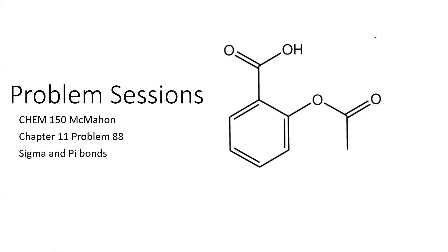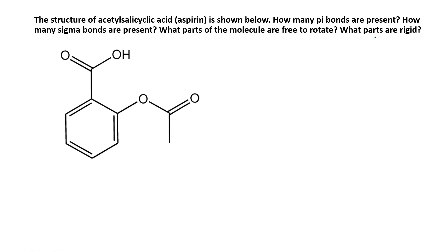Hello, students. This week we have another session for solving problems, and we're choosing Chapter 11, Problem Number 88: how to determine the number of sigma and pi bonds in an organic structure. The problem reads: the structure of acetylsalicylic acid, which essentially is aspirin, is shown below. How many pi bonds are present? How many sigma bonds are present? And what parts of the molecule are free to rotate? What parts of the molecule are rigid?